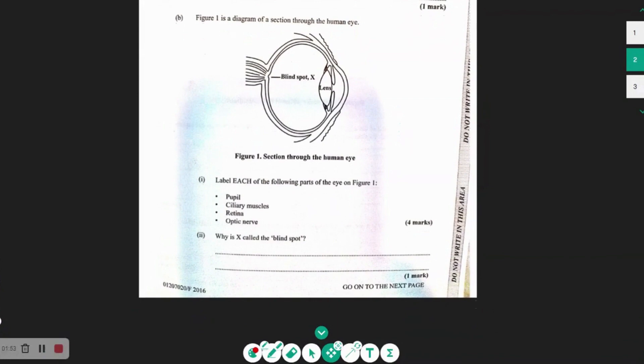Next, we have part B. So figure 1 is a diagram of a section through the human eye. So they're showing us the blind spot. We have the lens. So what they want us to do, the first part, label each of the following parts of the eye on figure 1.